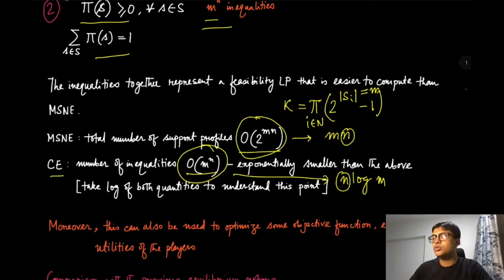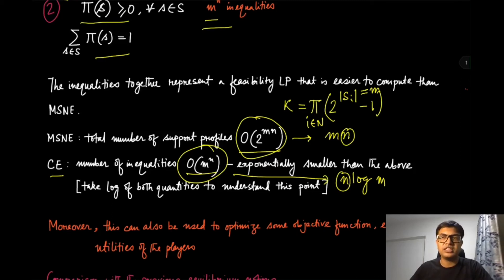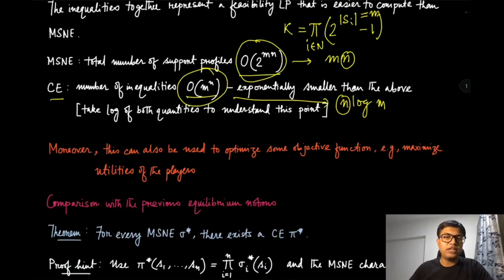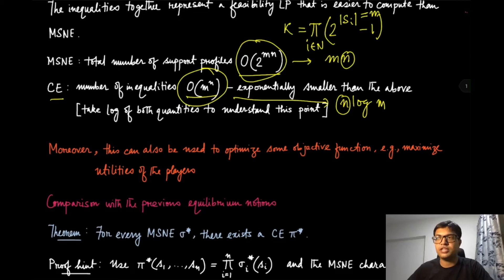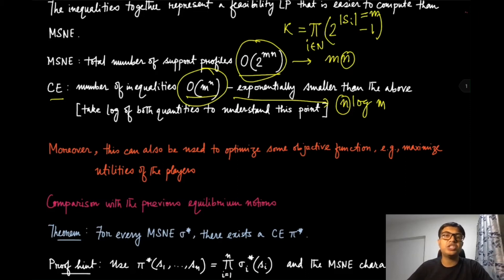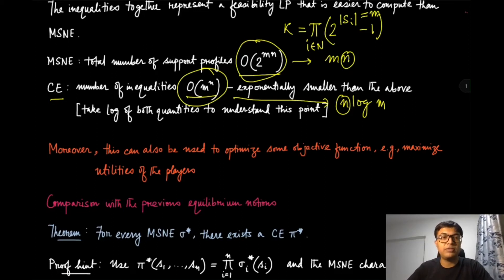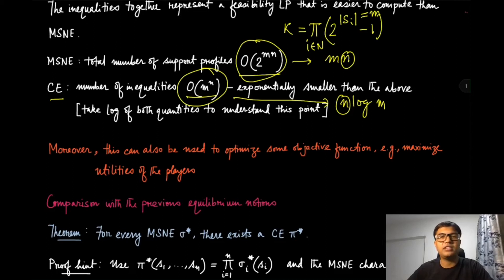So correlated equilibrium not only gives fewer inequalities, but each of those inequalities is linear — making it much easier to solve. On top of that, since there exist multiple correlated equilibria (as we saw in the traffic signal game and the football/cricket game), the question becomes: which correlated equilibrium should we choose? That can be resolved by solving the same feasibility program with an objective function, making it a full-fledged linear program.